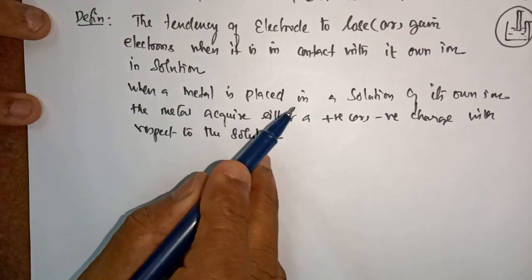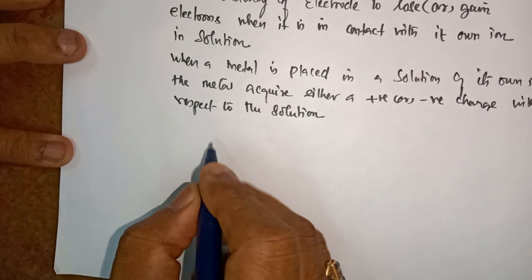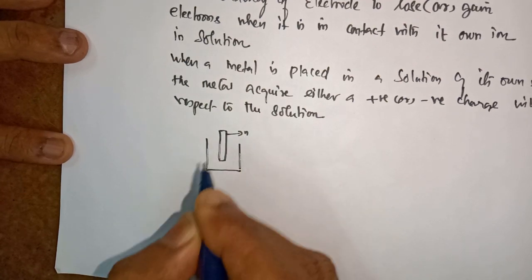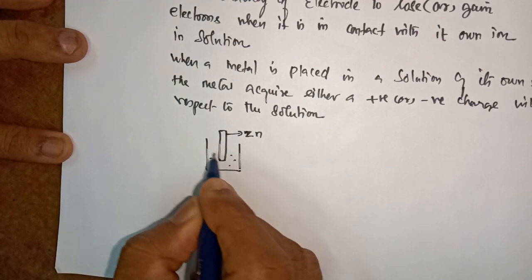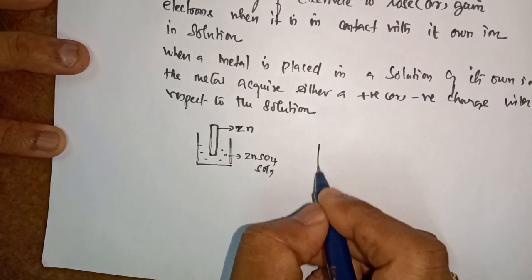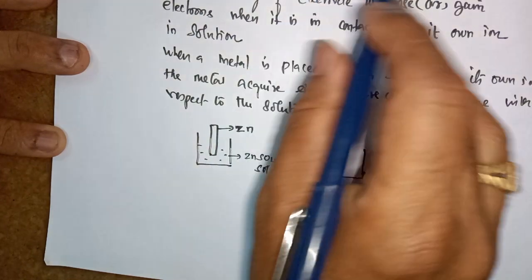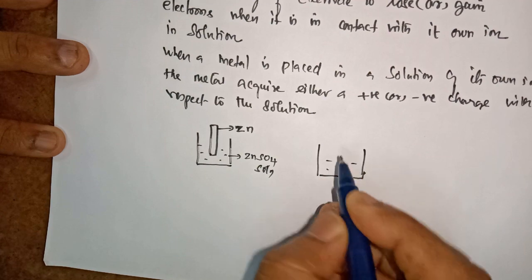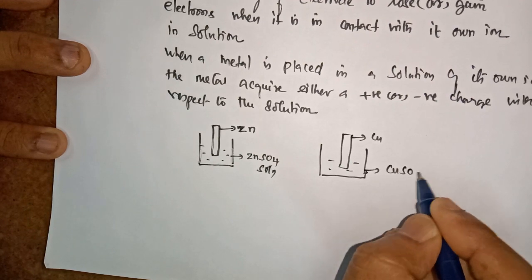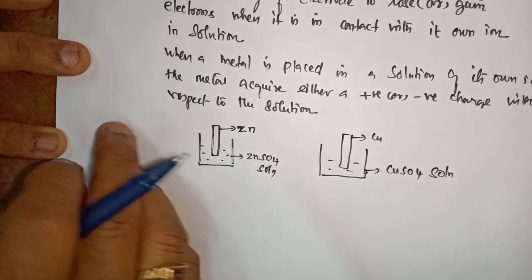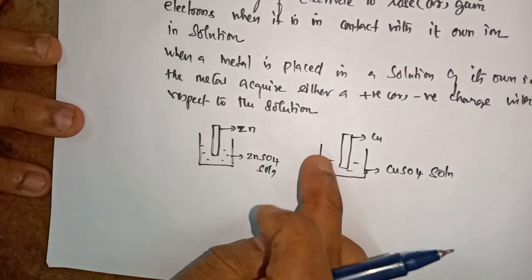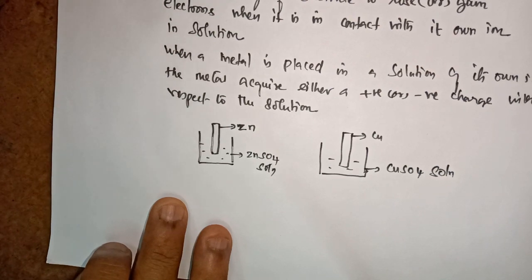That means when a metal is placed in a solution of its own ion — suppose I take a beaker and keep a zinc rod in its solution, which is zinc sulfate solution — that is called a single electrode. Similarly, I take a copper rod and keep it in copper sulfate solution. These both are not connected — that is called open circuit. When they are in open circuit, a potential is developed. The developed potential is called the single electrode potential.